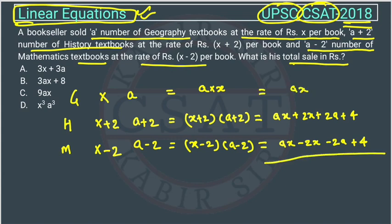We will add all these. This is ax, ax, ax, so this is 3ax. This 2x and minus 2x will cancel. This plus 2a and minus 2a will cancel. This is 4 plus 4, so this is 8. Therefore, this is 3ax plus 8.